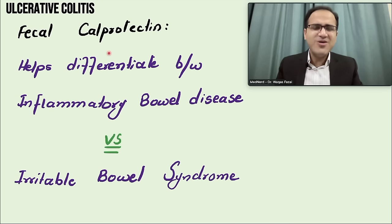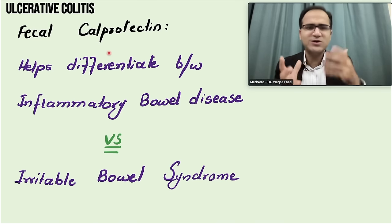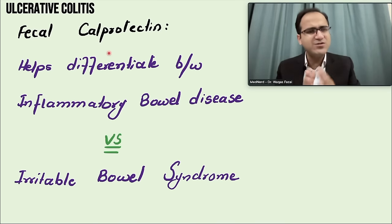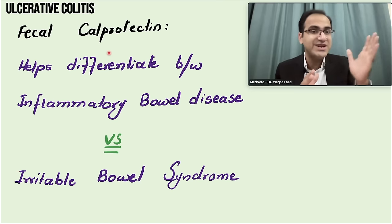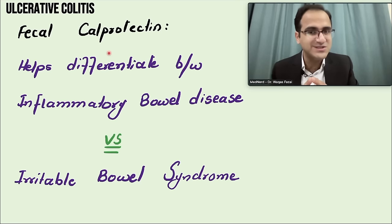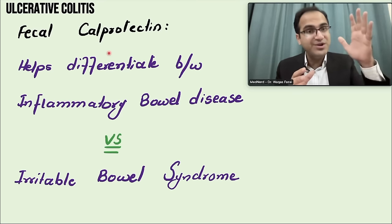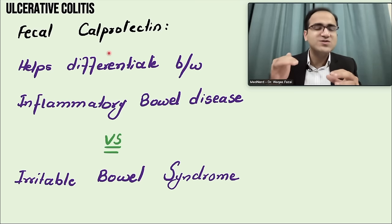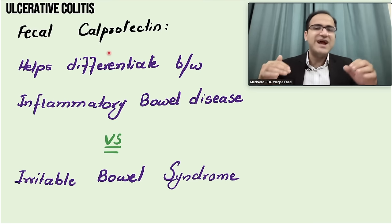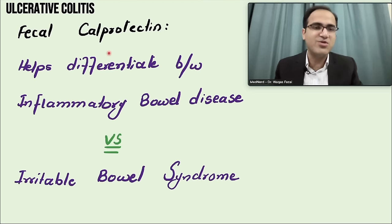Fecal calprotectin level is a commonly asked exam topic. If a patient has irritable bowel syndrome versus inflammatory bowel disease, the single test to differentiate them is fecal calprotectin — it is elevated in inflammatory bowel disease and normal in irritable bowel syndrome. Irritable bowel syndrome is a diagnosis of exclusion; if fecal calprotectin is elevated, look for inflammatory bowel disease.